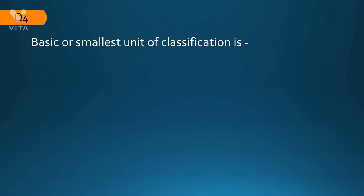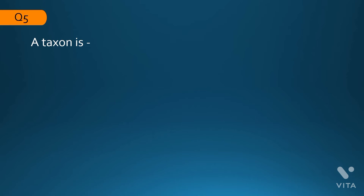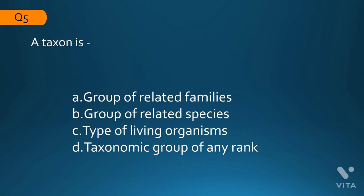The next question: what is the basic or smallest unit of classification? As just mentioned, the options are species, genus, family, and kingdom. The correct answer is species — species is the basic or smallest unit of classification.